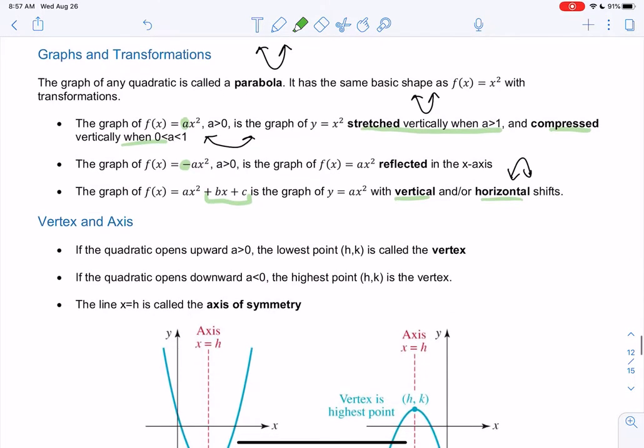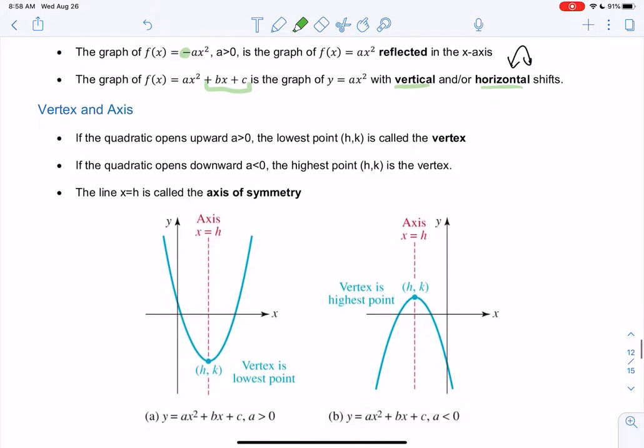So the vertex, we can see in the graph below. We'll figure out how to find it in a second. We call it hk. It's like the lowest point, or for an upside down graph, it's the highest point.